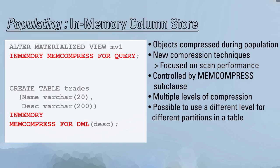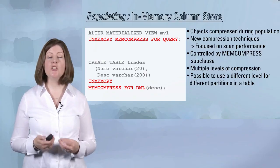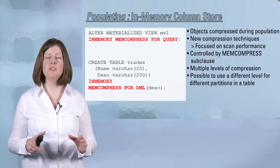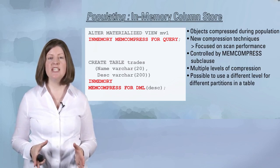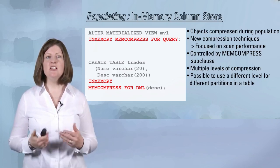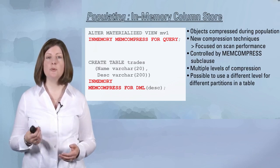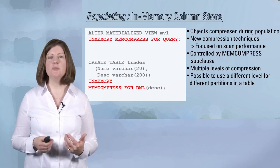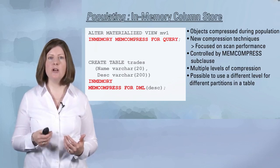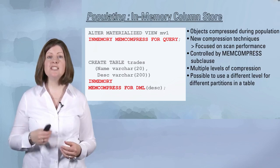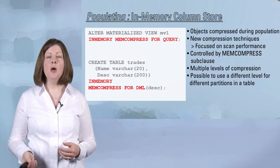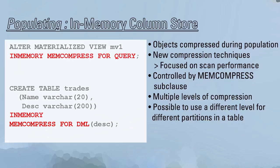By default, all of the objects populated in the in-memory column store are going to be compressed using a new type of compression technique that's different from the compression techniques we've used to date in the Oracle database. These compression techniques are focused on performance — specifically query performance. These new compression algorithms allow us to apply the where clause predicates or filter predicates directly on the compressed data. By default, you're getting MEMCOMPRESS FOR QUERY, but you can change that if you wish.